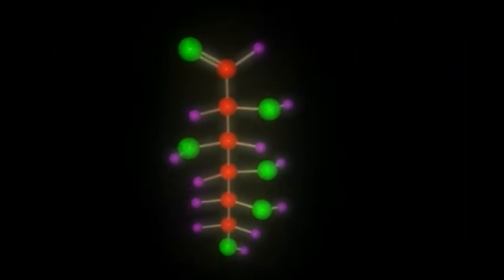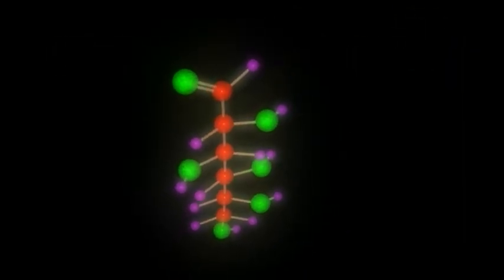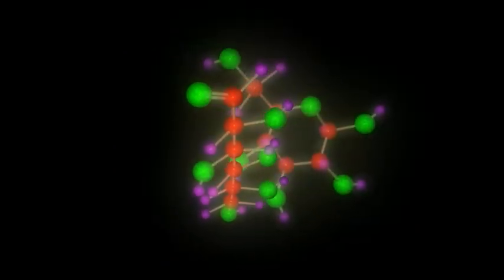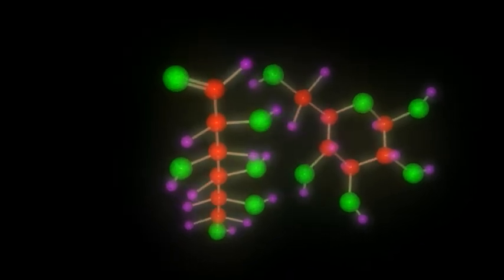This molecule is a molecule of glucose, simple sugar. And in addition to having a chain structure, it can loop on itself to form a ring like this.